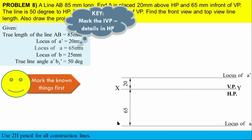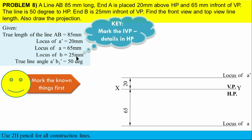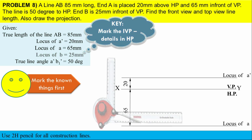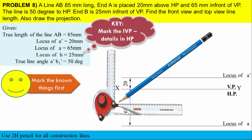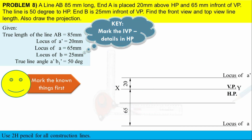One more locus is locus of B - that is 25 mm in front of VP. From XY, measure 25 mm below and draw that locus also. Name it locus of B. Fantastic! Now we have to mark one end of the line.